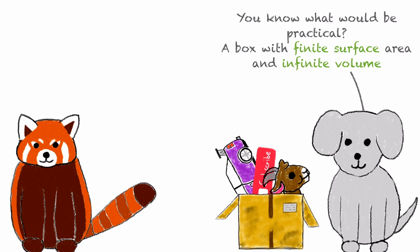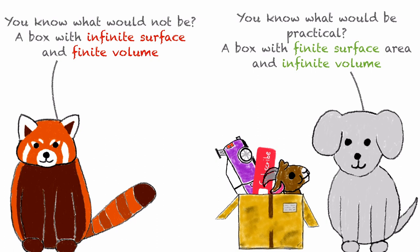Rex, overhearing Floki's wish, notes that an opposite shape would be very impractical. A box having an infinite surface area but only a finite volume would be amongst the most impractical for moving and not helpful at all.